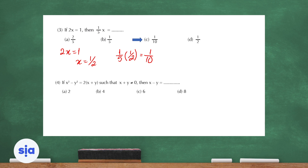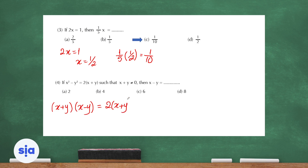Question 4: it's given that x squared minus y squared equals 2 times open bracket x plus y, such that x plus y is not equal to 0. The question wants you to find the value of x minus y. Since x squared minus y squared factors as x plus y times x minus y, and setting that equal to x plus y, we cross out x plus y from both sides, so x minus y equals 1. The answer is choice A.